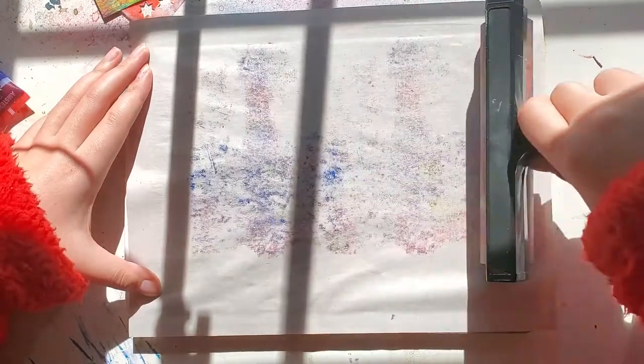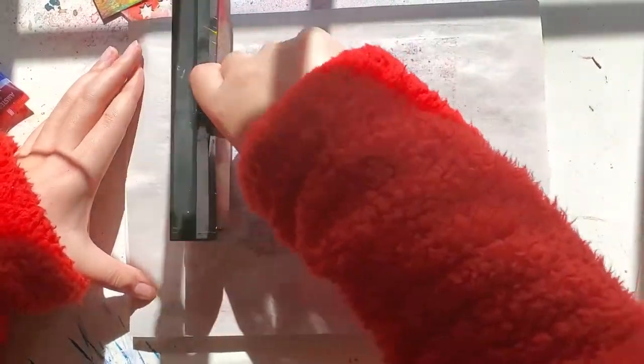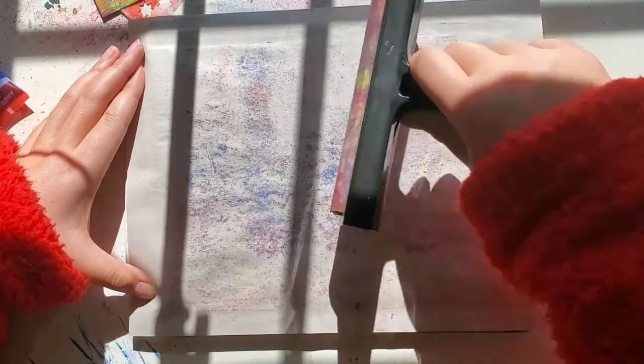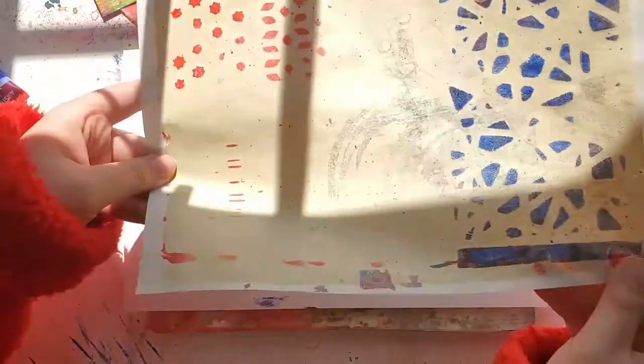And what I can also do is I can use my brayer just on top so I can get all the colors off this plate. So this is just a scratch piece of paper. And it's kind of cool. And we can always use it for a background.